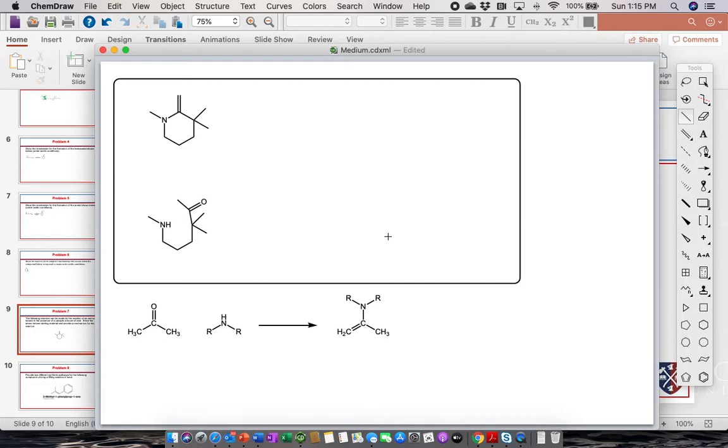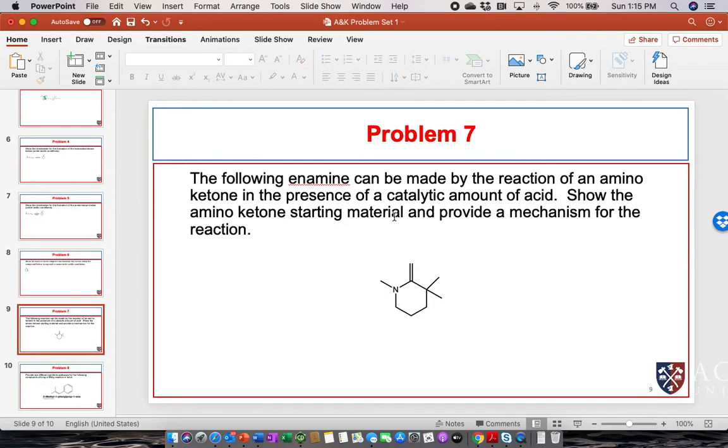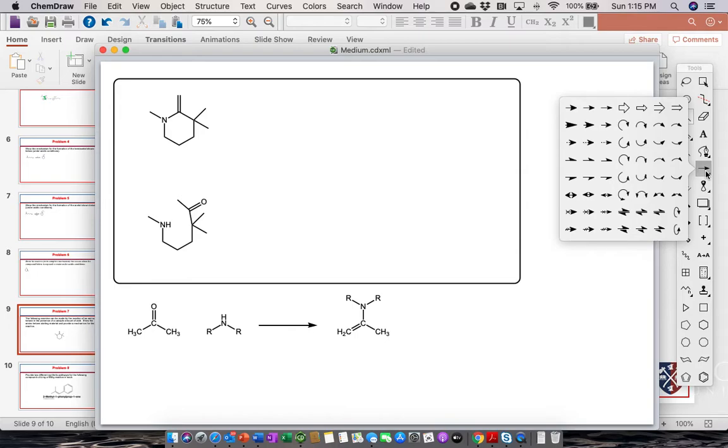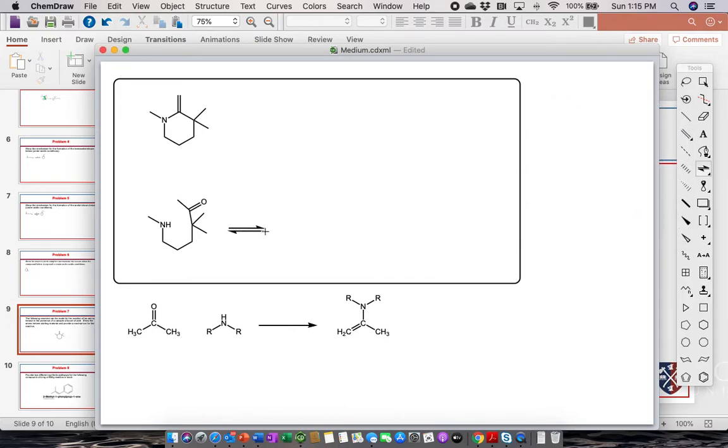Now all we have to figure out, the next part of the question is show the amino ketone starting material. We've done that and provide a mechanism for the reaction. Now I just have to figure out how did I get from here to here. We were told that it was under acidic conditions. I'm going to do some equilibrium arrows here and we're going to throw a proton out here because we have some acid.